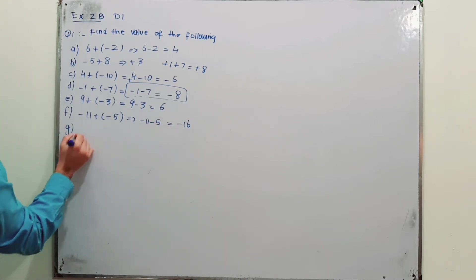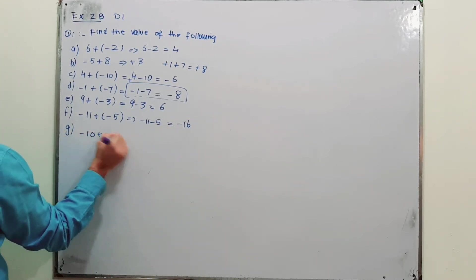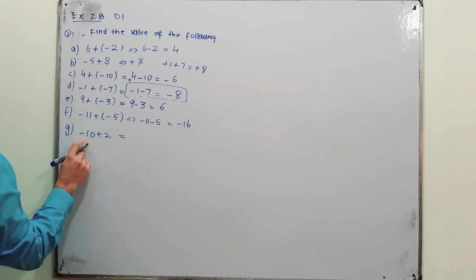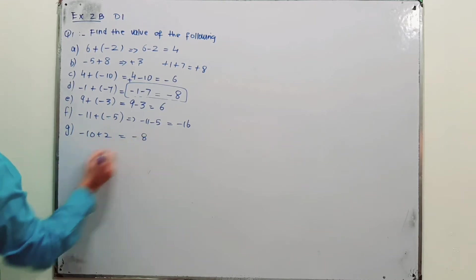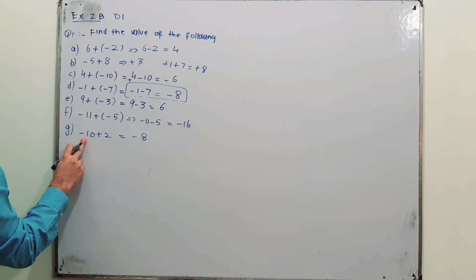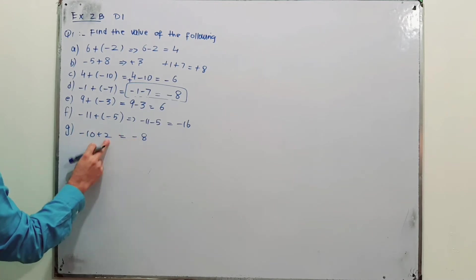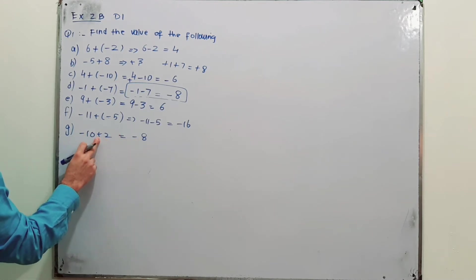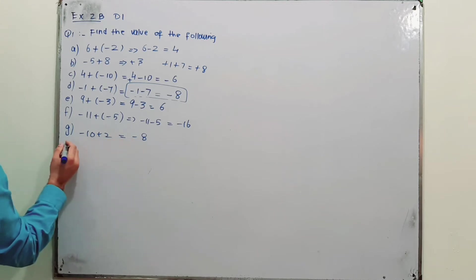Part G: minus 10 plus 2 gives minus 8. The 10 is a bigger negative number, and the sign of the bigger number is retained. So minus 10 plus 2 is minus 8.